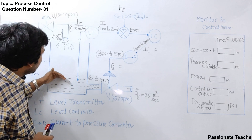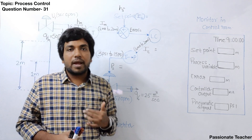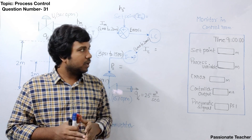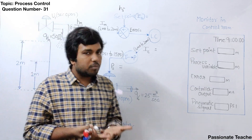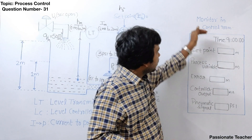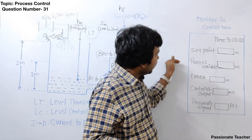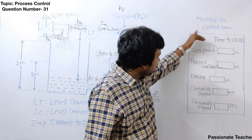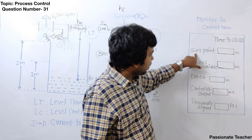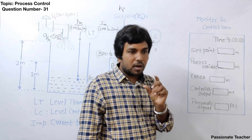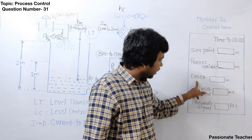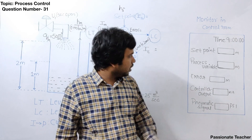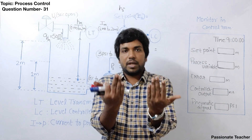The primary target of this entire system is that the water level should be at our desired position. Now let us see what will happen in industry. If you are an engineer working in a process industry, inside the control room you will have a monitor displaying the time, and below that a box indicating the setpoint, process variable, error, controller output, and pneumatic signals. With the latest technology you can see all these signals on the screen clearly.